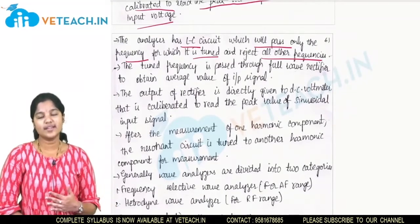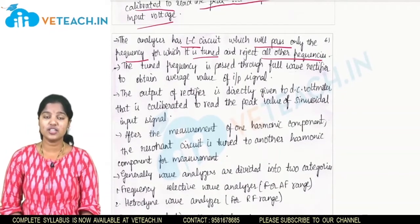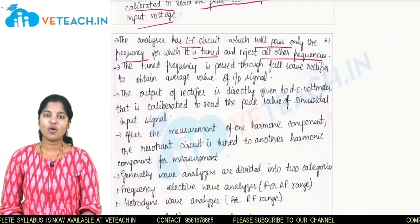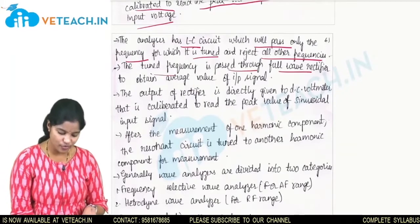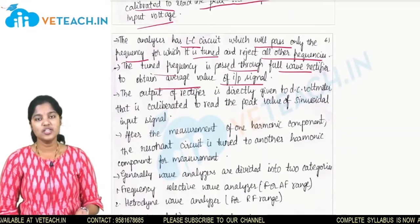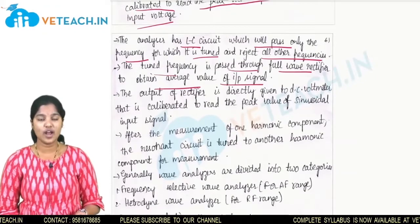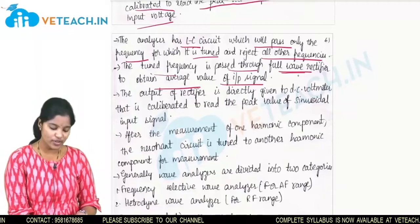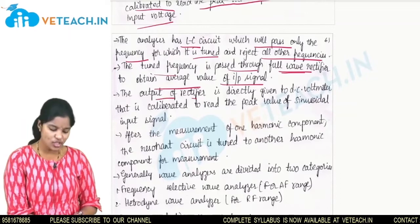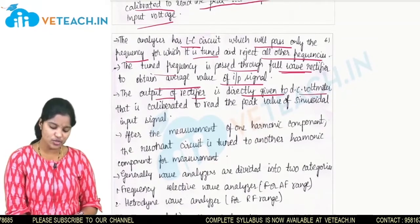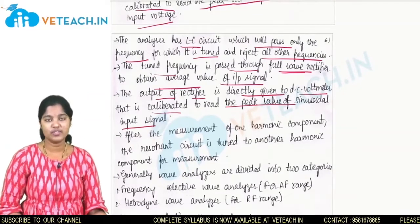When a wave enters the circuit, it allows only the frequencies to which the LC components are tuned and rejects all other frequencies of the waveform. The tuned frequency is passed through the full wave rectifier to obtain the average value of the input. The output of the rectifier is directly given to the DC voltmeter, which is calibrated to read the peak value of the sinusoidal input signal.